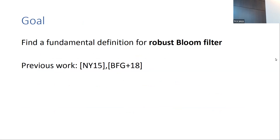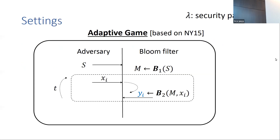We aim to unify and provide a robustness definition for bloom filters facing adaptive adversarial behavior. Recently several papers have investigated this topic suggesting different robustness definitions. Two such works are the one by Naor-Yogev and another by Bender et al. Both consider an adversary that uses adaptivity to find false positives, while Bender et al.'s main concern was repeated queries. In this work, we follow Naor-Yogev and define new definitions expressed as tests that the bloom filter should withstand, formalized by an adaptive game.